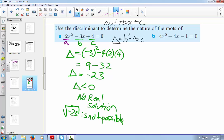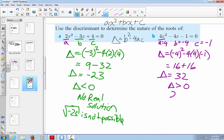Is it always going to work that way? Let's try the second example. So here, we've got a equals 4, b equals negative 4, and c equals negative 1. So the discriminant will equal negative 4 squared minus 4 times 4 times negative 1 equals 16 plus 16 equals 32. That means delta is greater than 0. There will be two solutions.